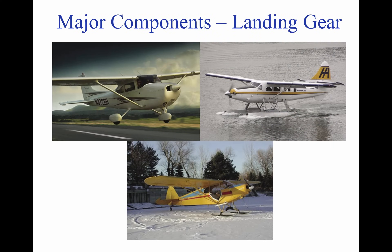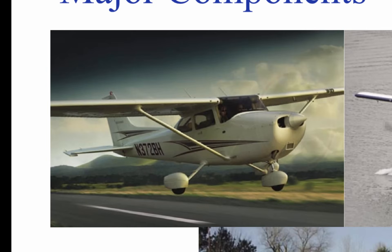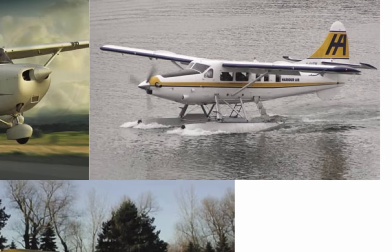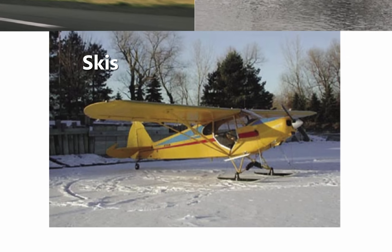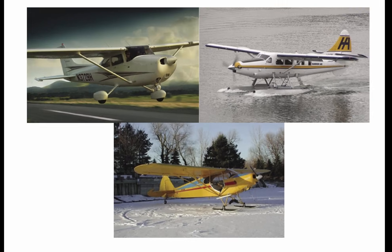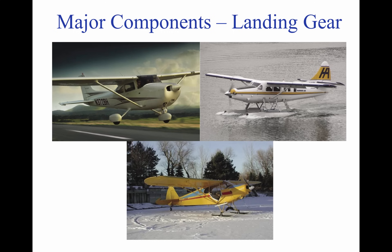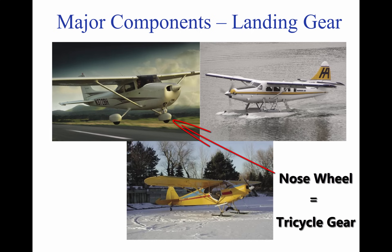Landing gear supports a plane when it is parked, taxiing, taking off, and landing. The most common type of landing gear are wheels. Planes can also be fitted with floats, which let planes land on water, and skis, which are used to land on snow or ice. Airplanes with conventional landing gear are sometimes referred to as tail-wheel airplanes. When the third wheel is located on the nose, it is called a nose wheel, and the design is referred to as a tricycle gear.